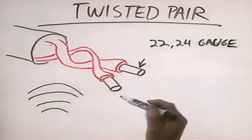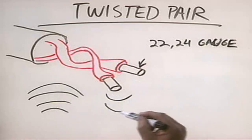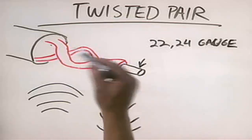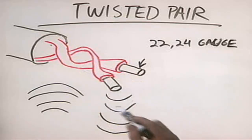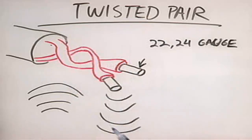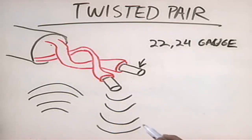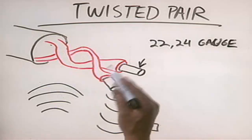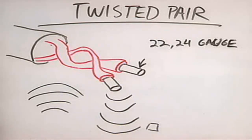They absorb signals very easily, and another weakness is that they radiate signals. The signals running through the wire get broadcasted very weakly out through the wire itself, making twisted pair cabling susceptible to eavesdropping. If someone had the right equipment, they could use a special type of radio receiver outside the cable to pick up the EMI coming off these wires and capture the data.